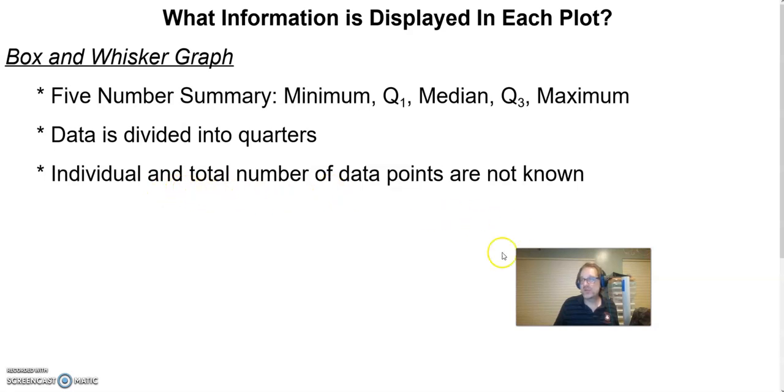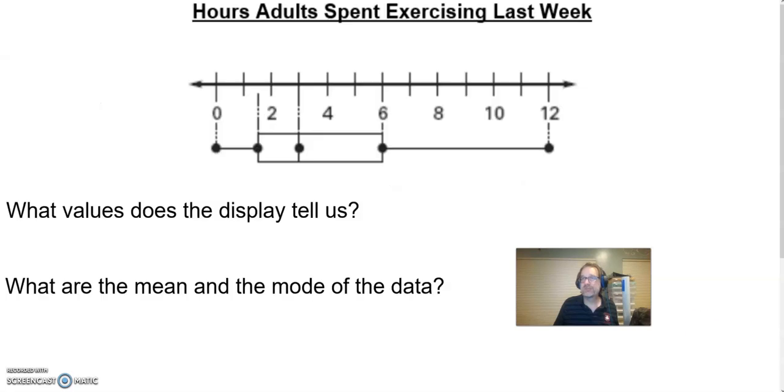And I do not know how many data values are represented in the graph. So here's a picture of a box and whiskers about the hours adults spent exercising last week. Every number represents hours spent exercising: zero hours exercising, one hour, three hours, four, five, six, seven, eight, etc. So what values does this display tell us? Well, I already said at the very beginning it tells us our minimum value, our first quartile, our median, our third quartile, and our maximum.